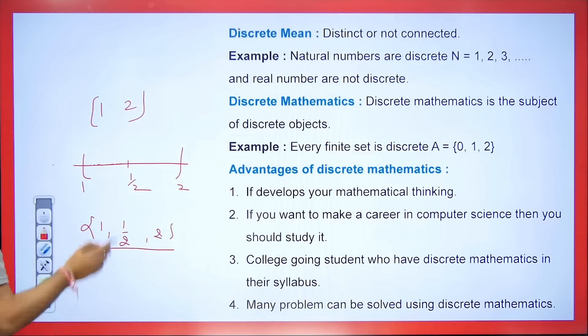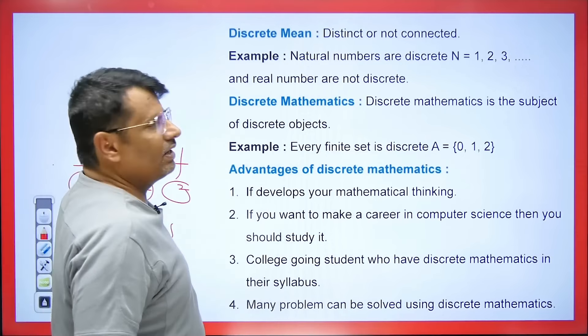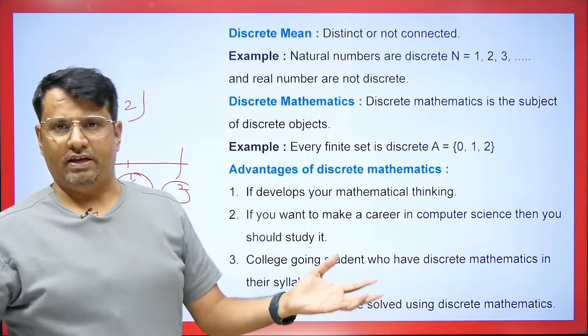Discrete means not connected. In a continuous set every element is connected — there is an element between one and two, like 1.001, 1.002 — every point on the real line comes. But when we talk about discrete, imagine a set with only {1, 1/2, 2} — we don't have elements in between, so it is not connected. For example, natural numbers are discrete because between 1 and 2 there is no natural number. The set of integers is discrete. Rational numbers are also disconnected in this sense.